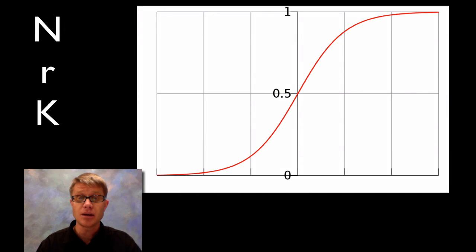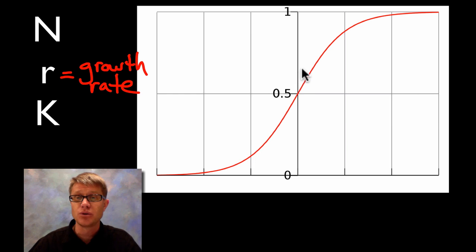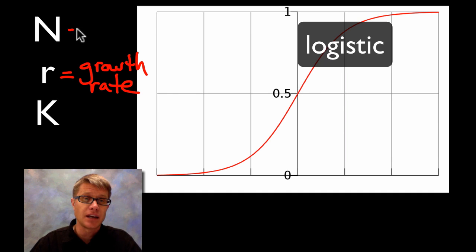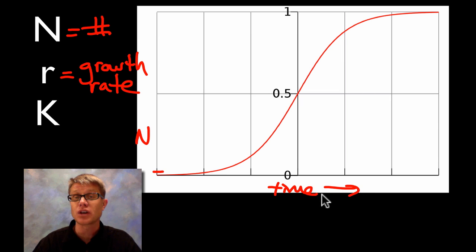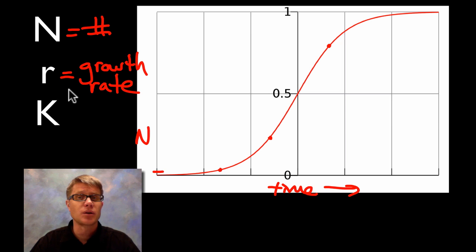Basically we have to talk about population growth. Any population where you have a positive R — and R stands for growth rate — you're going to follow a curve. You'll first have exponential growth, and then eventually you'll run out of space or food. There's going to be competition, and eventually you're going to hit what's called logistic growth. We call this the J-shape curve for exponential, or the sigmoidal S-shape curve which is logarithmic. N is going to be the number of individuals in the population. R is the growth rate — calculated as births minus deaths. If R is ever positive, you're going to get this curve.